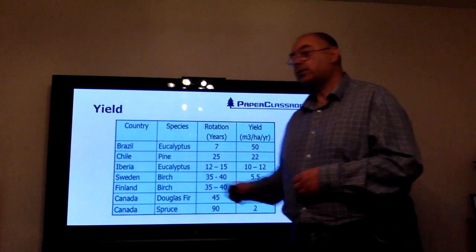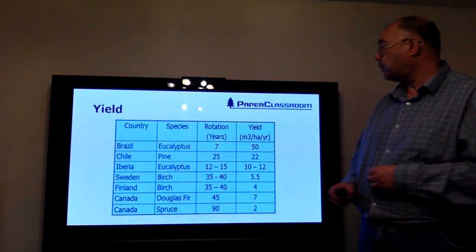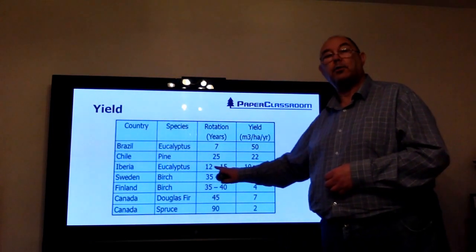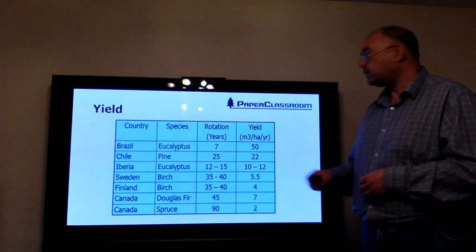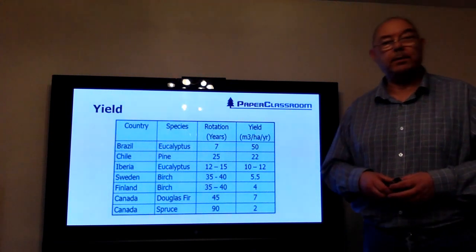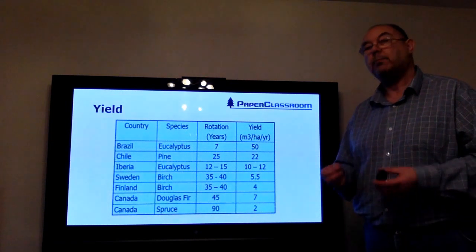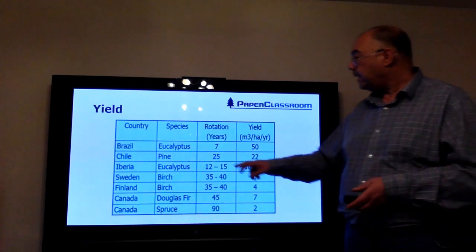Chile: not as hot, not as much water around as Brazil, so things take longer to grow. The harvesting cycle is typically 25 years, and we are managing to harvest 22 cubic meters of wood per hectare per year.